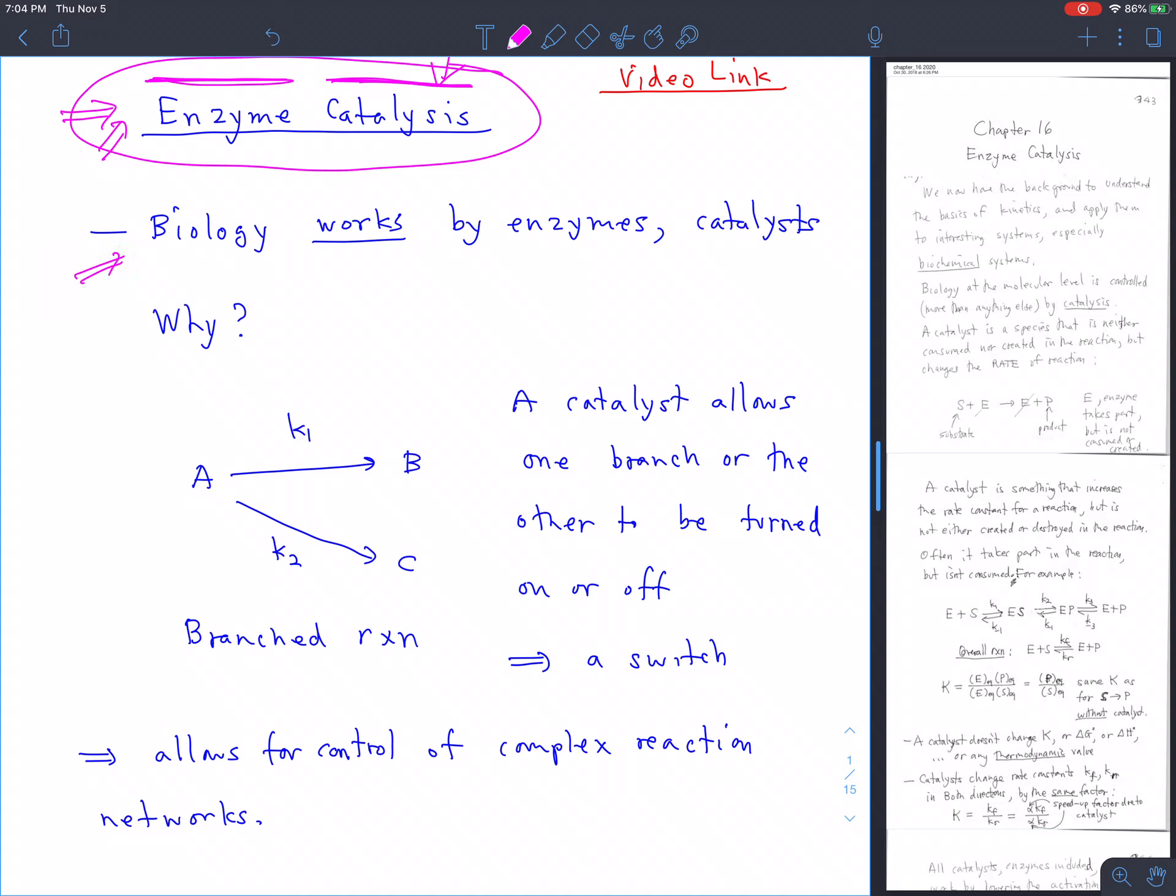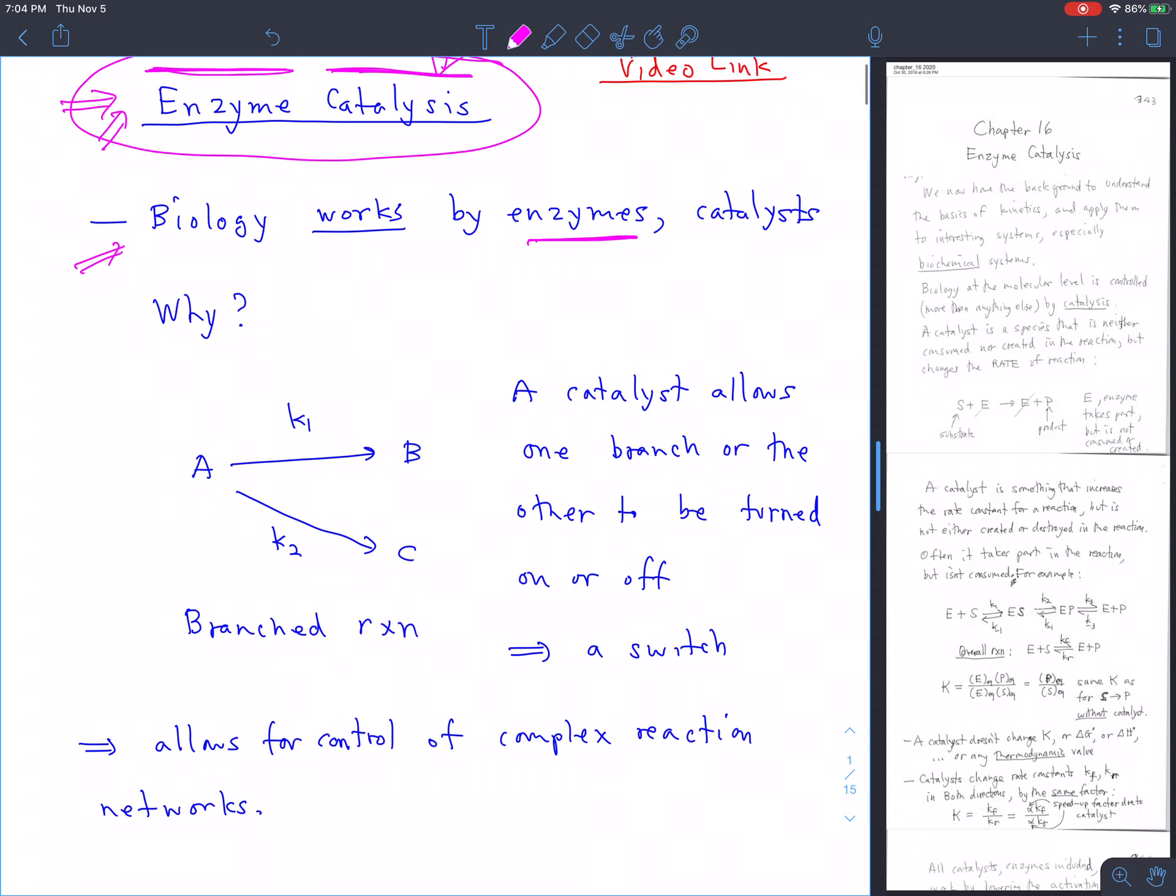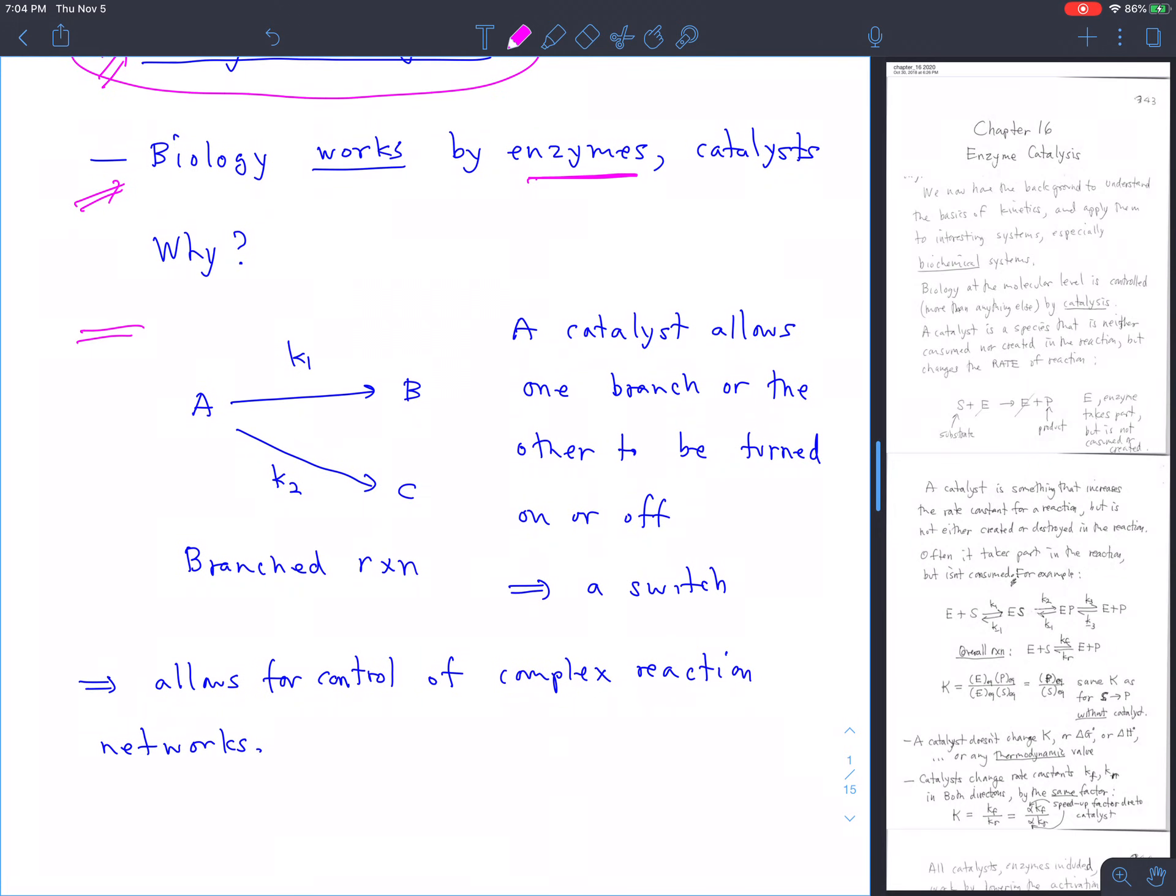In biology, catalysis is everything because enzymes are everything. Just to pick one particularly crucial thing, if you've got a metabolic pathway and that metabolic pathway needs to be turned off or turned on, or if the metabolic pathway needs to be switched from one product to another, then how do you do that? How do you change a rate constant? How do you turn a rate constant off?